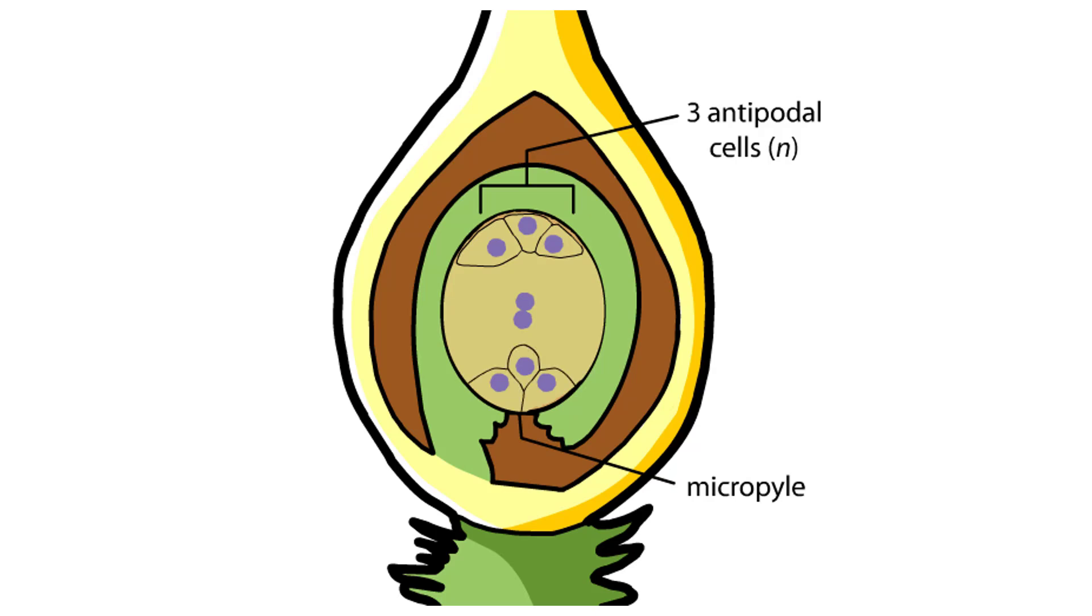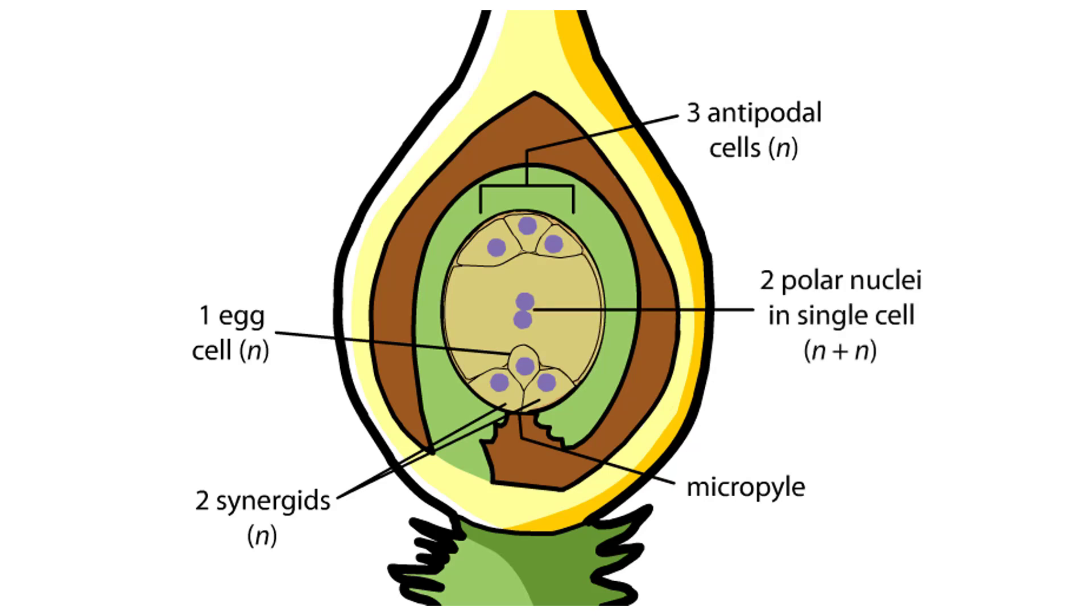Three cells also form near the micropyle. Two are called synergids and the other is the egg. Finally, two nuclei called polar nuclei remain together in one large central cell.